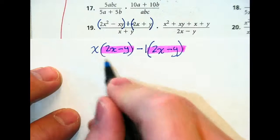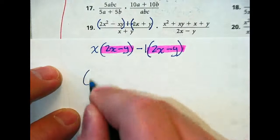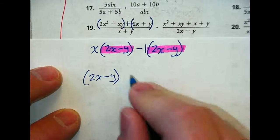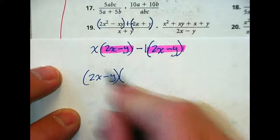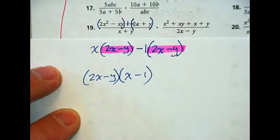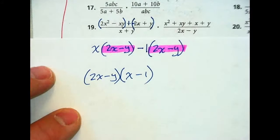Which means, I can now say, if I divide this thing by the greatest common factor and take the 2x minus y out, what am I left with? I'm left with x, and if I do that here, I'm left with minus 1. So x minus 1. You have now factored that top piece. That's called factor by grouping.